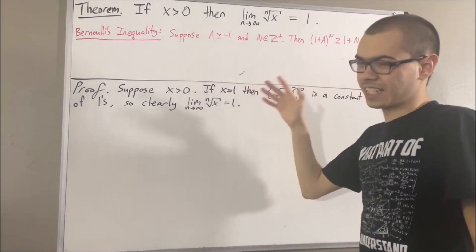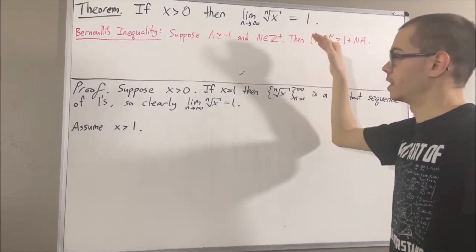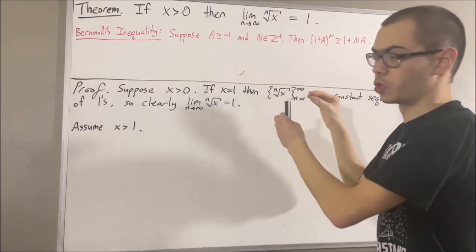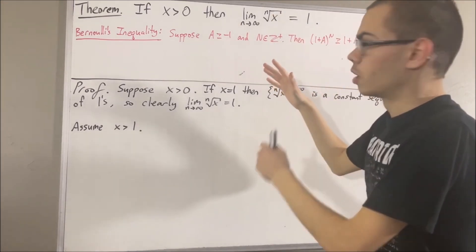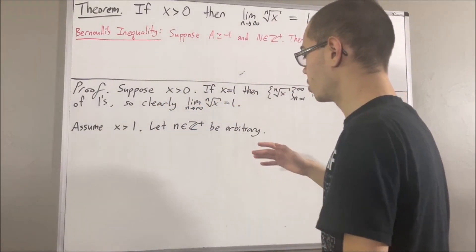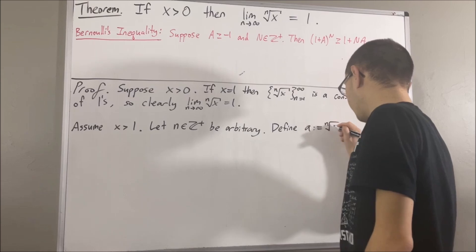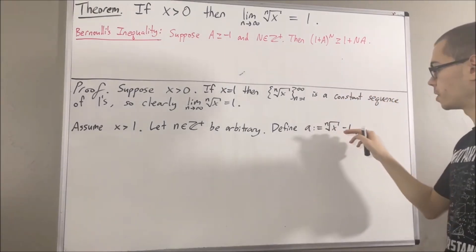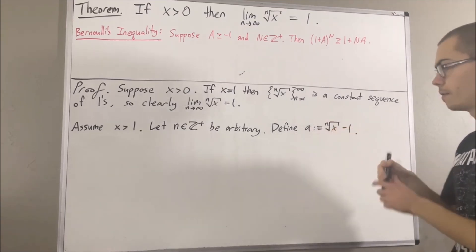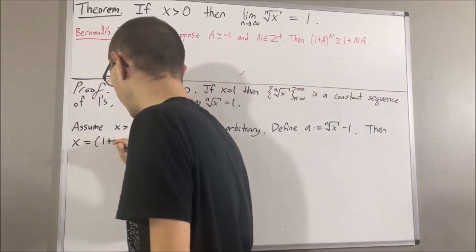Now, let's consider the case x is bigger than 1. To show that this sequence converges to 1, the idea is to show that the n-th root of x is squeezed between two sequences which also converge to 1. To see how we can do that, let's consider an arbitrary positive integer n, and we define the value a to be the n-th root of x minus 1. If we solve for x — adding 1 to the other side, then raising both sides to the power of n — we get x equals 1 plus a to the power of n.